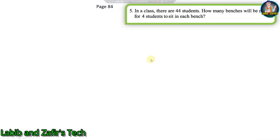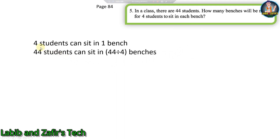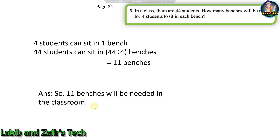Fifth question: in a class there are 44 students. How many benches will be needed for four students to sit in one bench? Four students can sit in one bench, so 44 students can sit in 44 divided by 4 benches. We divide total students by students per bench: 44 divided by 4 equals 11 benches. So 11 benches will be needed in the classroom.